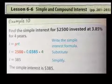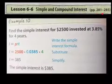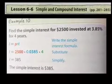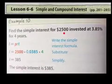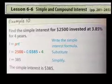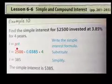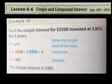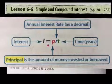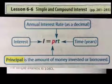Okay, continuing on with lesson 6-6, simple and compound interest. This lesson, for more information, you can reference the lesson on page 281 to 285. Example 10. Find the simple interest for $2,500 invested at 3.85% for 4 years. Let's use the formula: interest equals principal times rate times time. The principal is the amount of money invested or borrowed, and we said that it was $2,500.